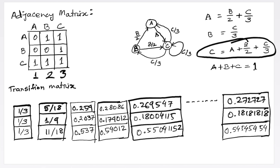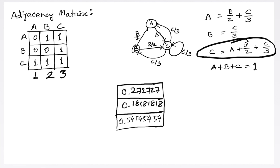Even if we keep multiplying the newest page rank vector with the transition matrix, we find that the newest vector is no longer changing. When the new page rank vector is almost equal to the page rank vector of the previous iteration, the page rank algorithm has converged. We then declare this as our final page rank vector and make our decision regarding which websites are most important based on the page rank values.